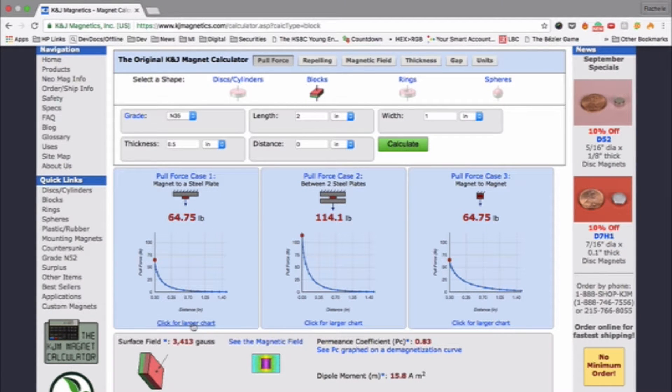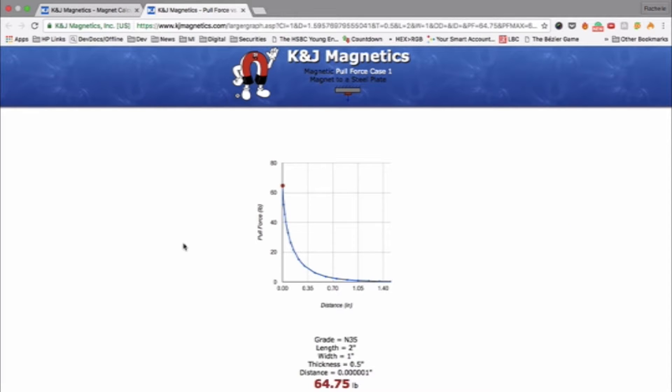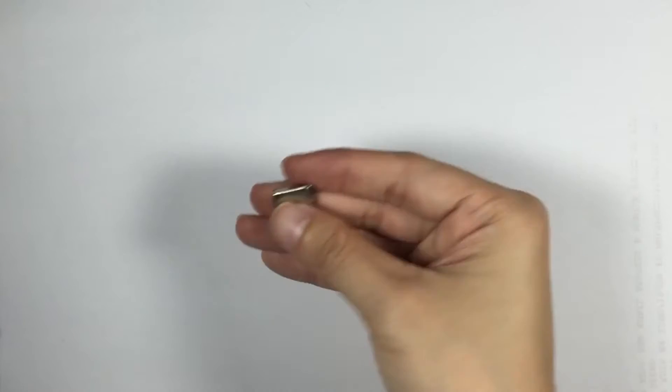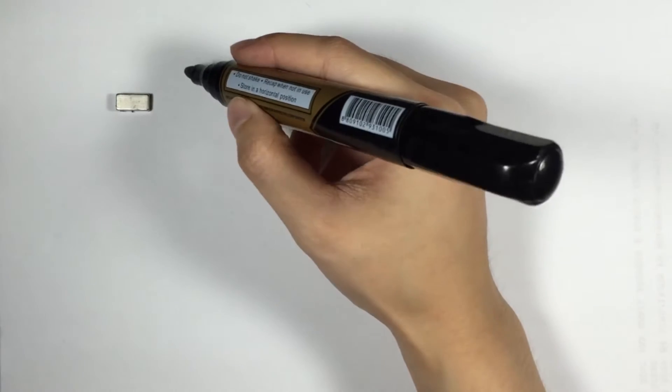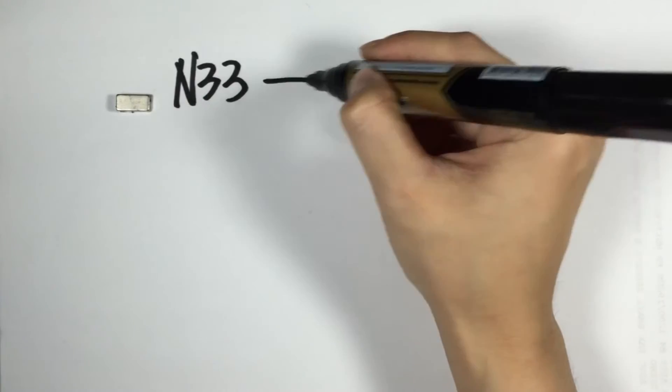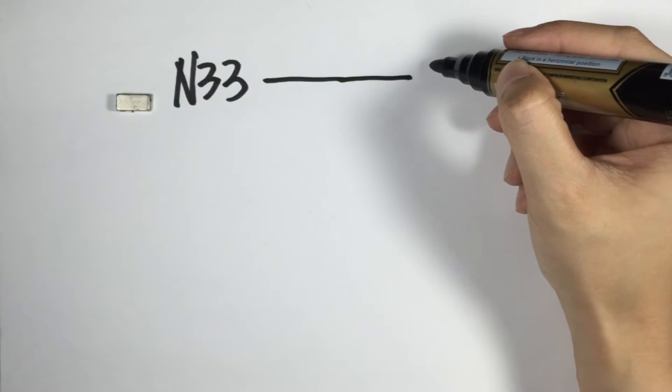Going back to gauss, regardless of the situation, the gauss will remain the same. To simplify this, the manufacturers have standardized this into grades. For neodymium magnets, for instance, grades for a single size of magnet can range from N33 to N52.